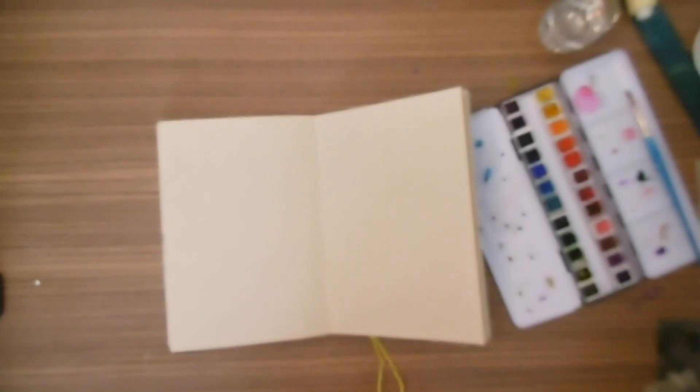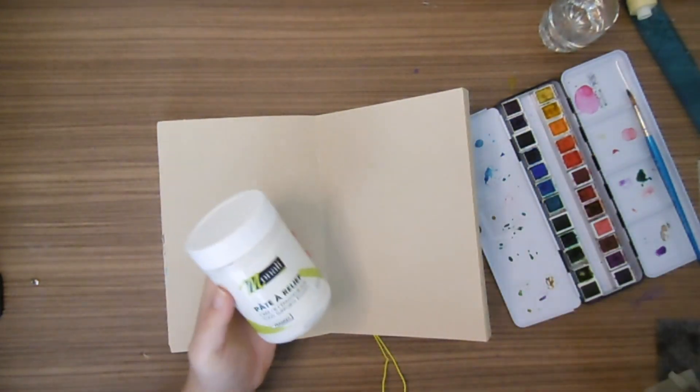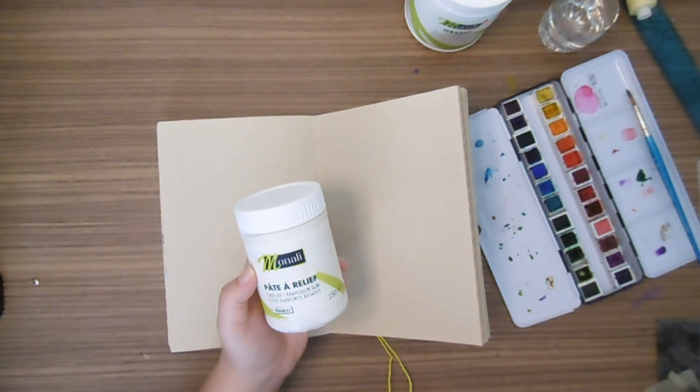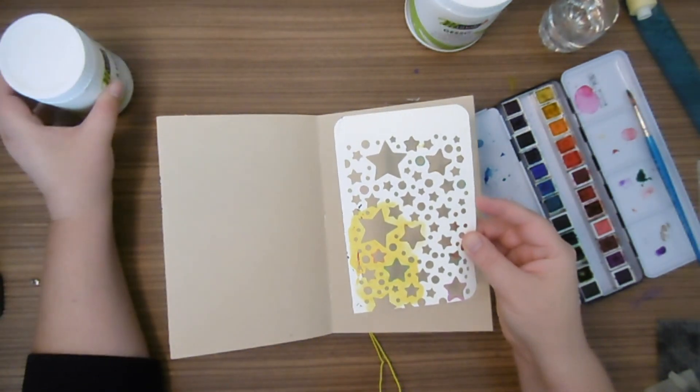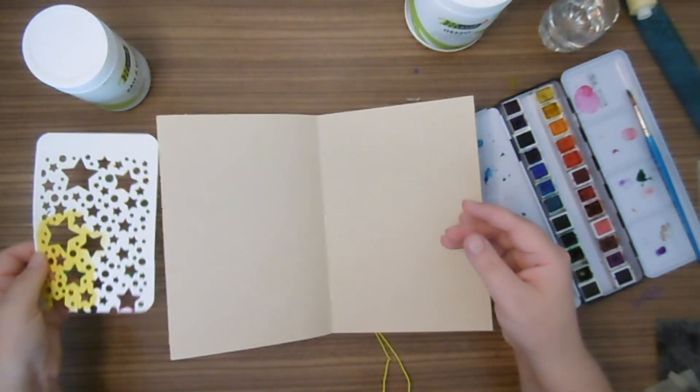Pour cette page, j'ai envie d'utiliser déjà un fond avec la gesso, d'utiliser aussi une pâte à relief comme celle-ci. Et pour cela, il va me falloir un pochoir. J'utilise un pochoir qui est en fait des restes de découpe de la caméo.